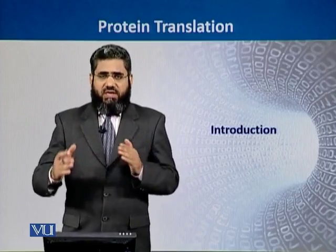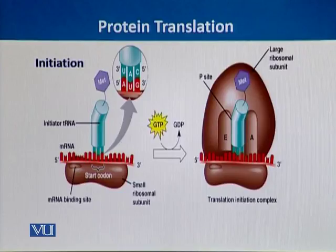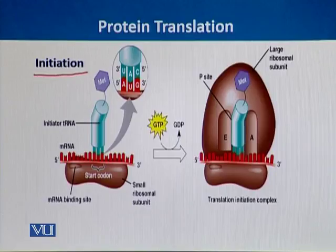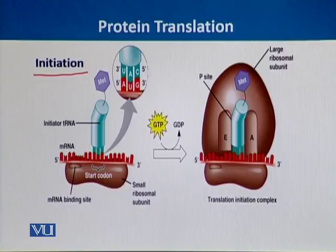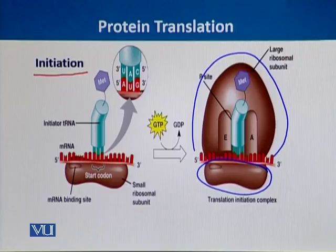We will now see the process of protein translation in detail. Protein synthesis or translation can be divided into three parts. The first part is initiation. Protein synthesis takes place in ribosomes, which are divided into two subunits: a smaller subunit and a larger subunit. When these two subunits combine together, along with other proteins, they collectively form the initiation complex.